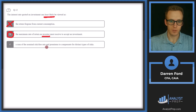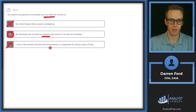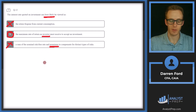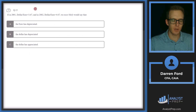Option C: a sum of the nominal risk-free rate and premiums to compensate for distinct types of risk. We can rule this out since it's an accurate view. For example, a treasury bond might trade at 4%, and a corporate bond with credit risk might trade at 5% — 100 basis points of spread. Another example is term premium: in a normal non-inverted yield curve, a one-year bond trades at a lower rate than a five-year bond. So we'll go with Answer B.